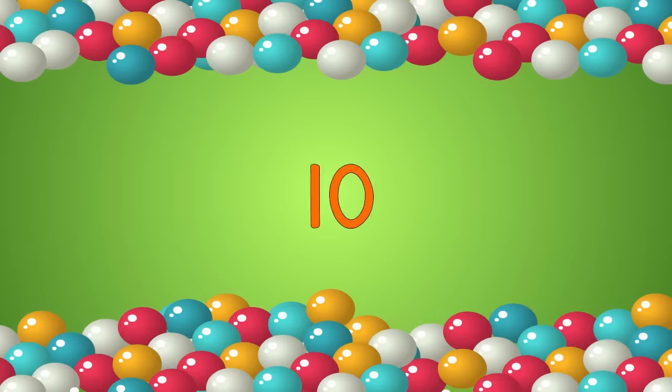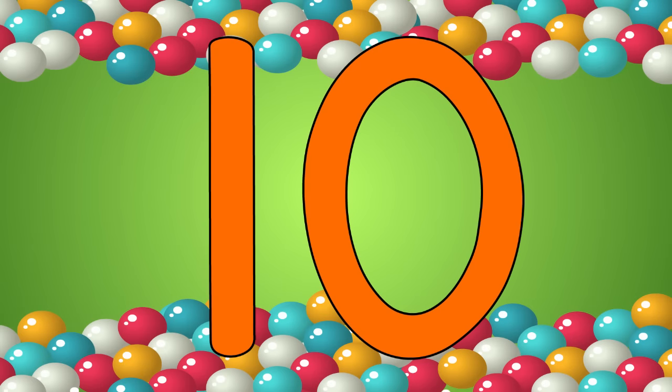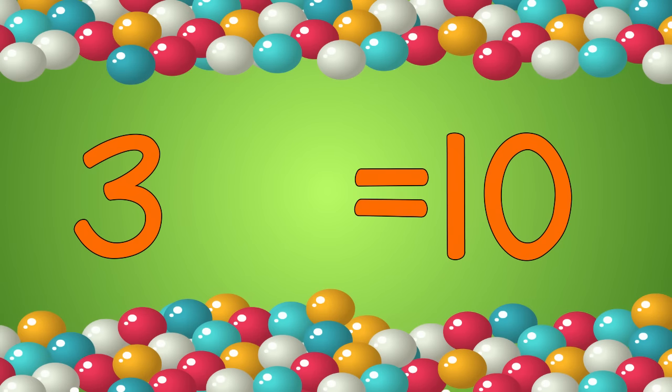Give me two numbers that are friends of ten. When you add them together they make a ten. To make ten you have 3 plus 7.